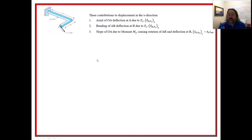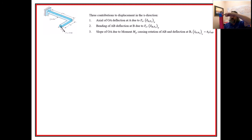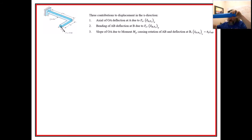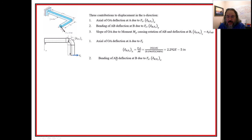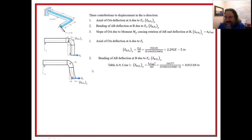The third X-direction contribution is less obvious: placing a force at the tip effectively applies a moment onto piece OA, which bends it. There's a case for a cantilever beam with a moment on the end, and that's the one we use. The axial deformation is just FL over AE — a simple one that gives a very small value around 1×10⁻⁵.